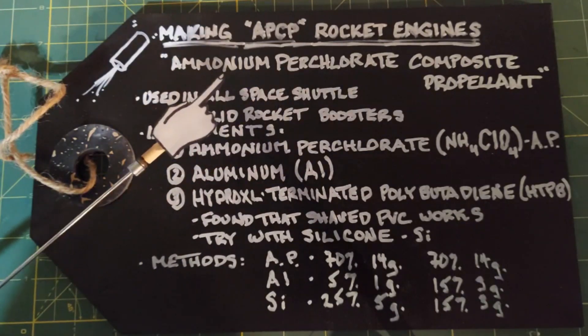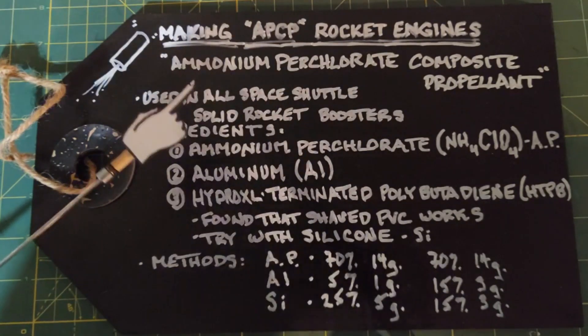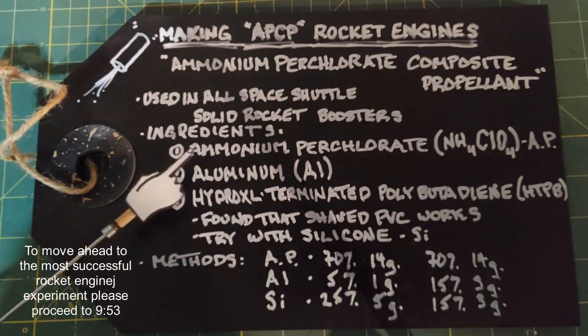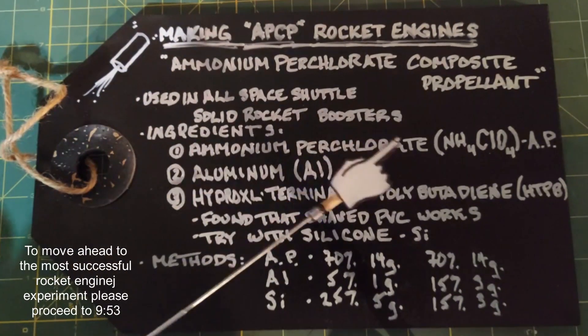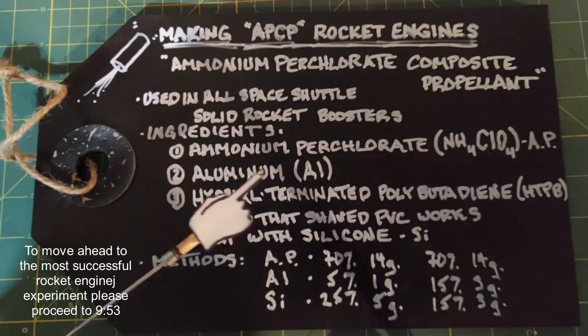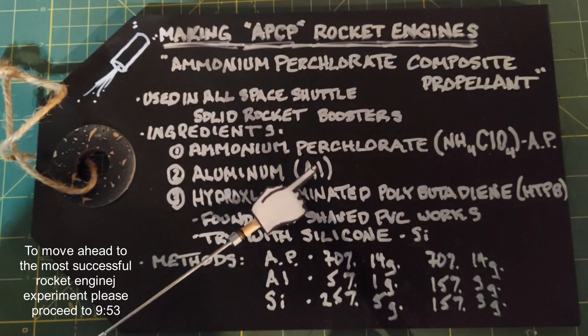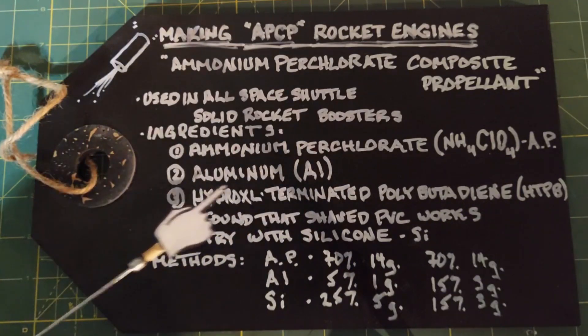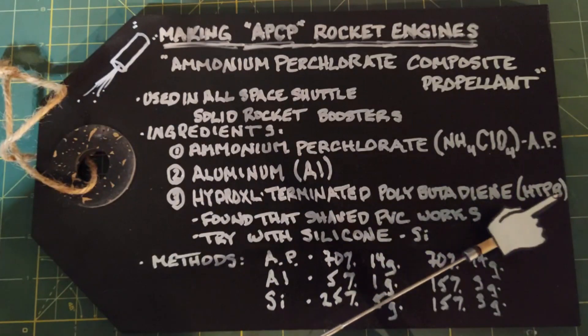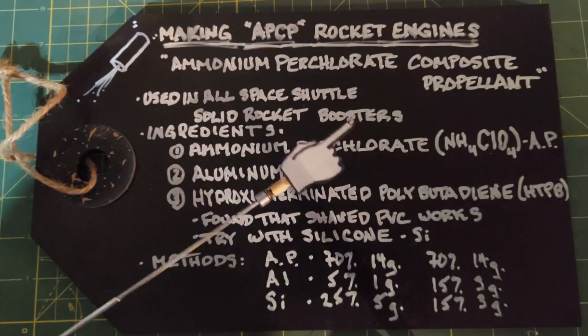They were used as the two solid rocket boosters on each side of the space shuttle. Traditionally the ingredients in making these rocket engines have been ammonium perchlorate, which has a chemical formula of NH4ClO4, aluminum with chemical formula Al, and hydroxyl terminated polybutadiene or known as HTPB for short.